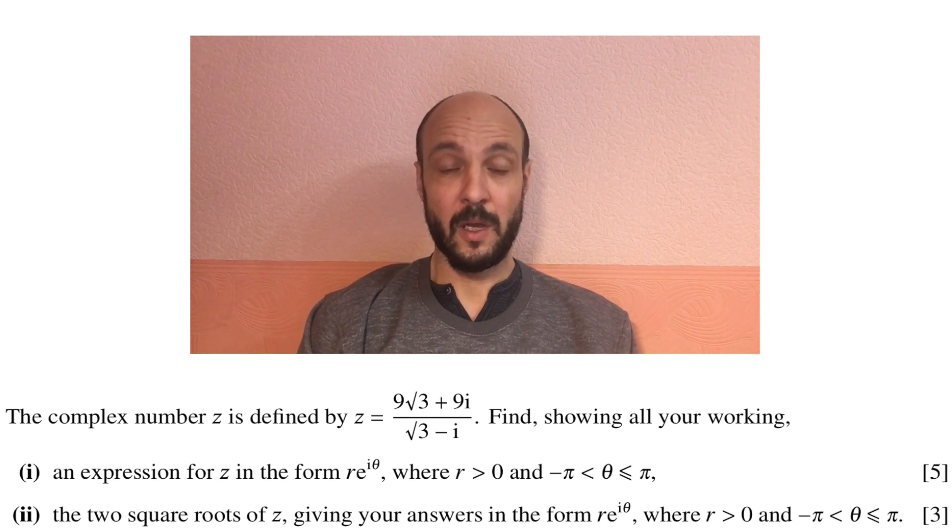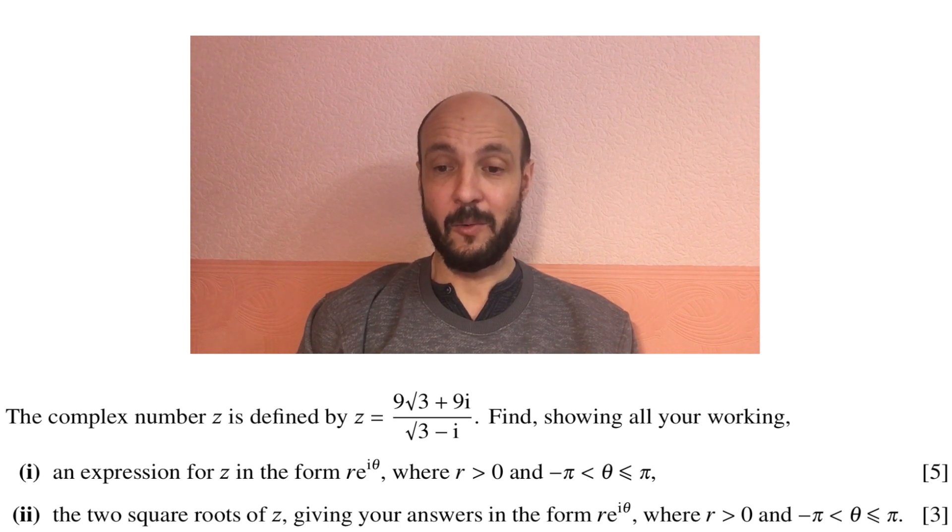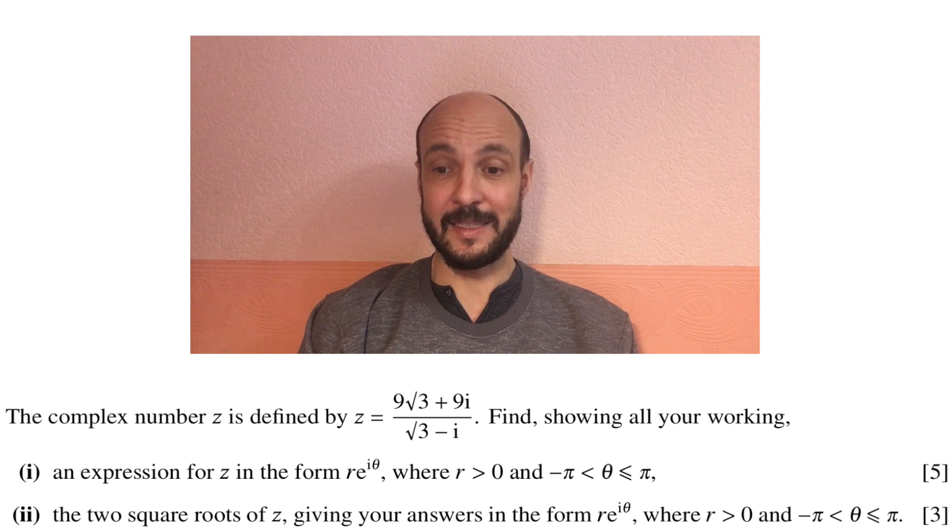Part 2: The two square roots of z, giving your answers in the form re^(iθ), where r > 0 and -π < θ ≤ π.